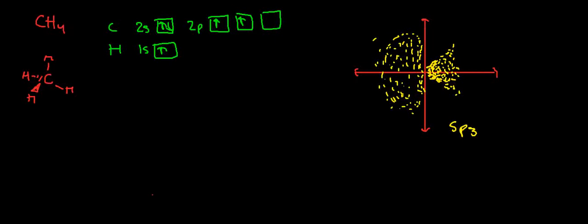Looking at methane, the geometry of the electron orbitals don't make sense when one considers S and P orbitals because they're not shaped that way.